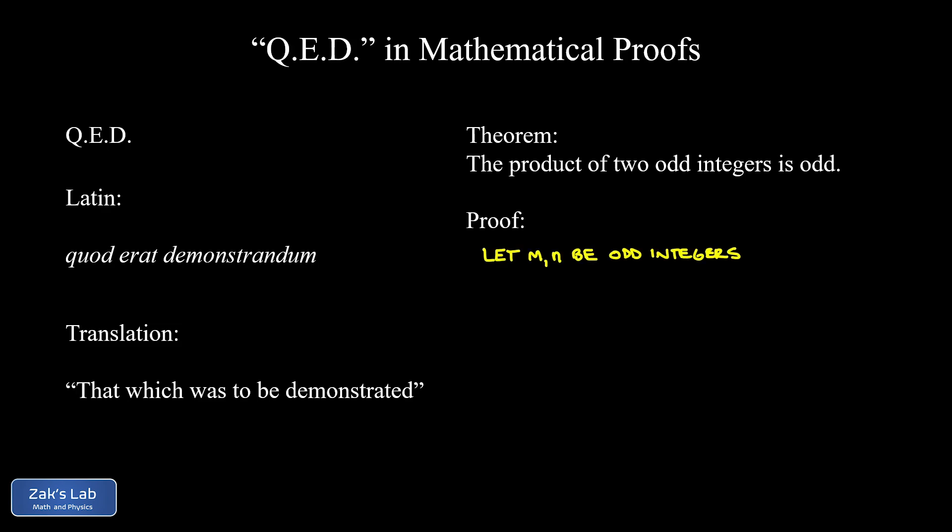Now it's considered just common knowledge as a starting point to understand that even numbers can be written as 2 times some integer because they're divisible by two. And odd integers can be written as even integers plus one. So this means our odd integer M is expressible as 2S+1 where S is some other integer. And we do a similar thing for N.